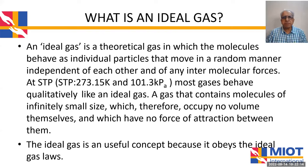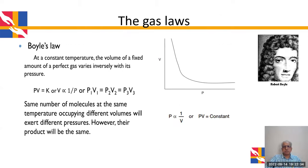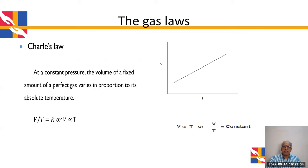An ideal gas is a theoretical concept where gas behaves as individual particles moving randomly with no intermolecular forces of attraction at standard temperature and pressure. This concept is useful because it obeys the ideal gas laws. Boyle's law states that at constant temperature, the volume of a fixed amount of a perfect gas varies inversely with its pressure. Charles' law says that at constant pressure, volume is directly proportional to temperature.